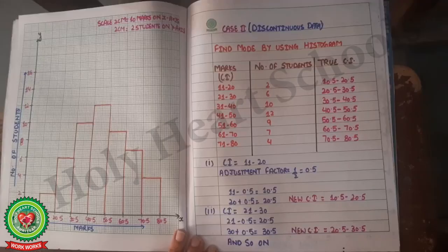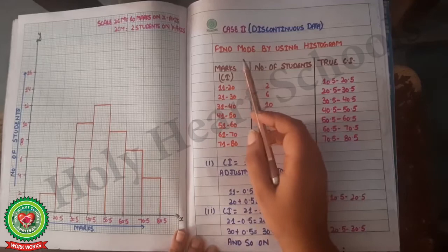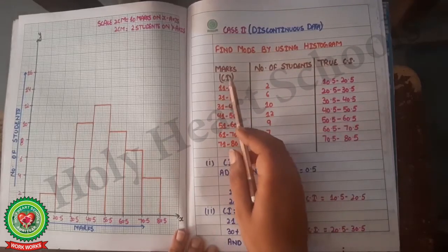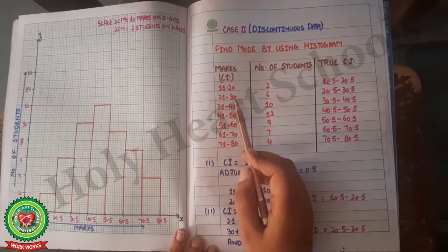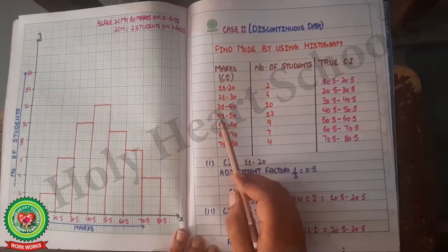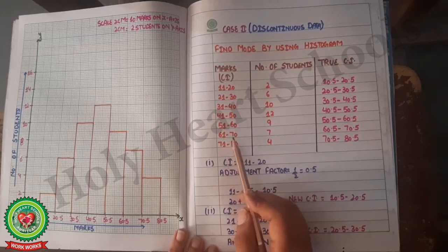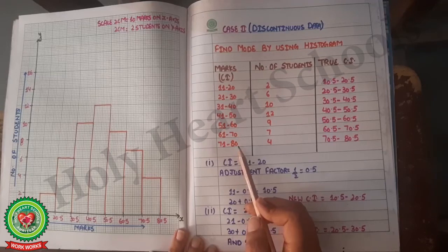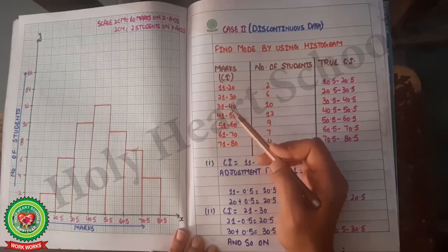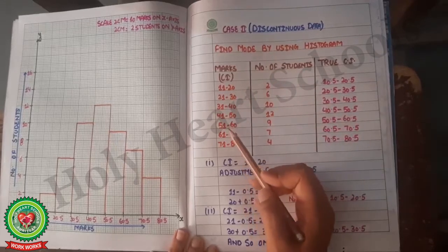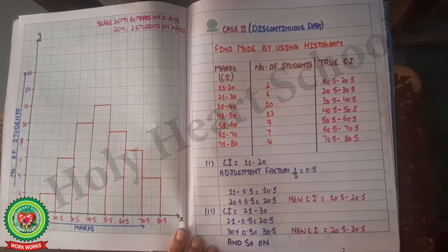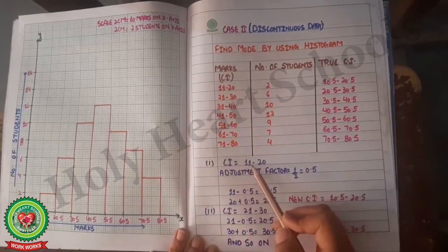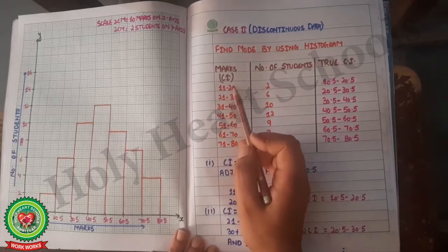Now see case number two. The problem is: find mode by using histogram. The class intervals (marks) are 11–20, 21–30, 31–40, 41–50, 51–60, 61–70, and 71–80. The condition to draw the graph is that data must be in continuous form. Since this data is discontinuous, we first convert it using the adjustment factor, which is 0.5.